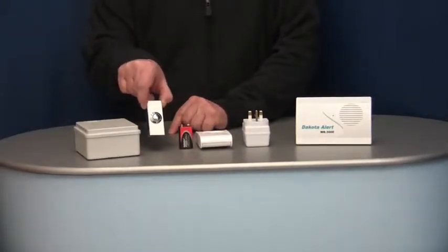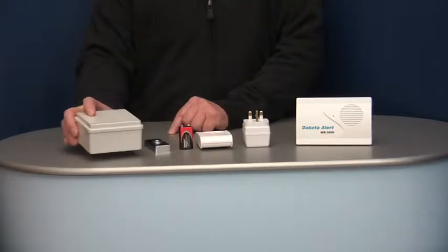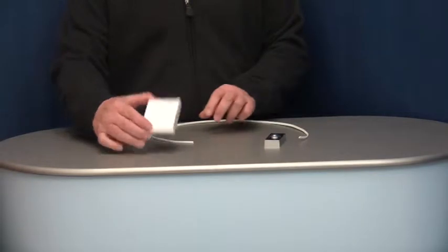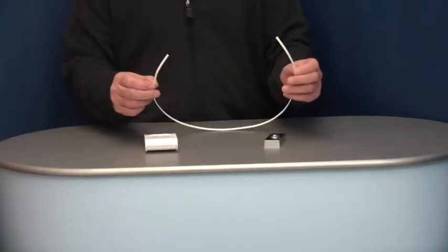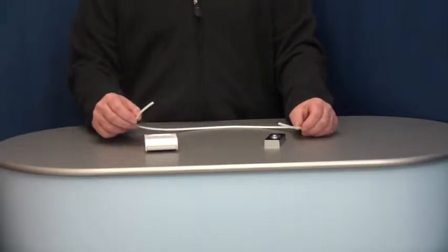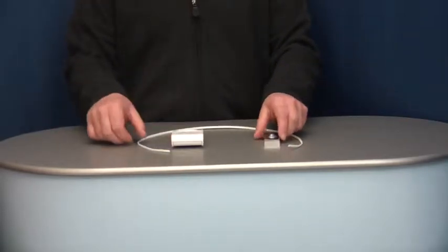It also includes a silver bell push and a weatherproof box. The push button is connected to the transmitter with normal twin bell cable. It's supplied with three meters of cable as standard.